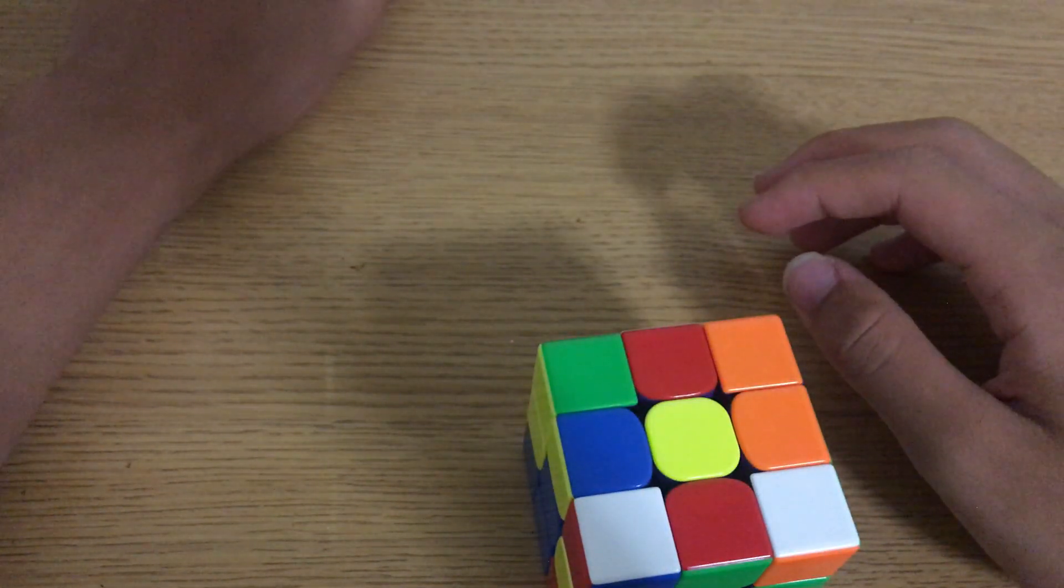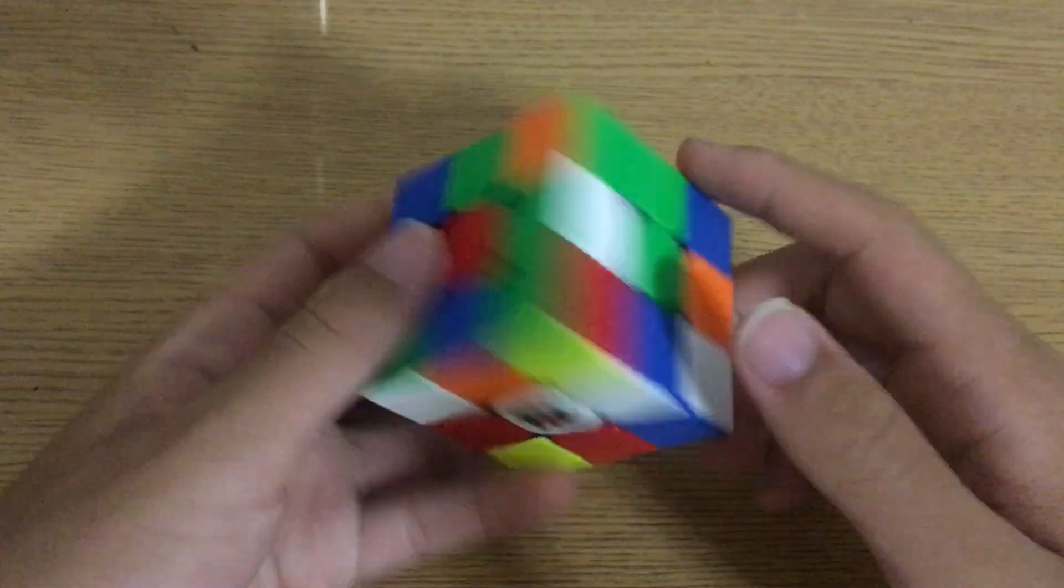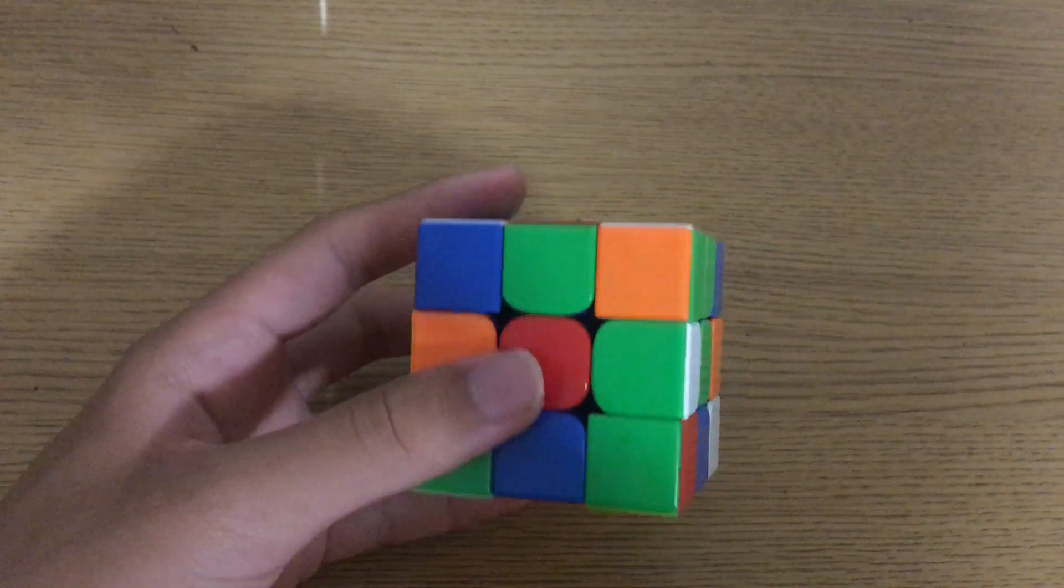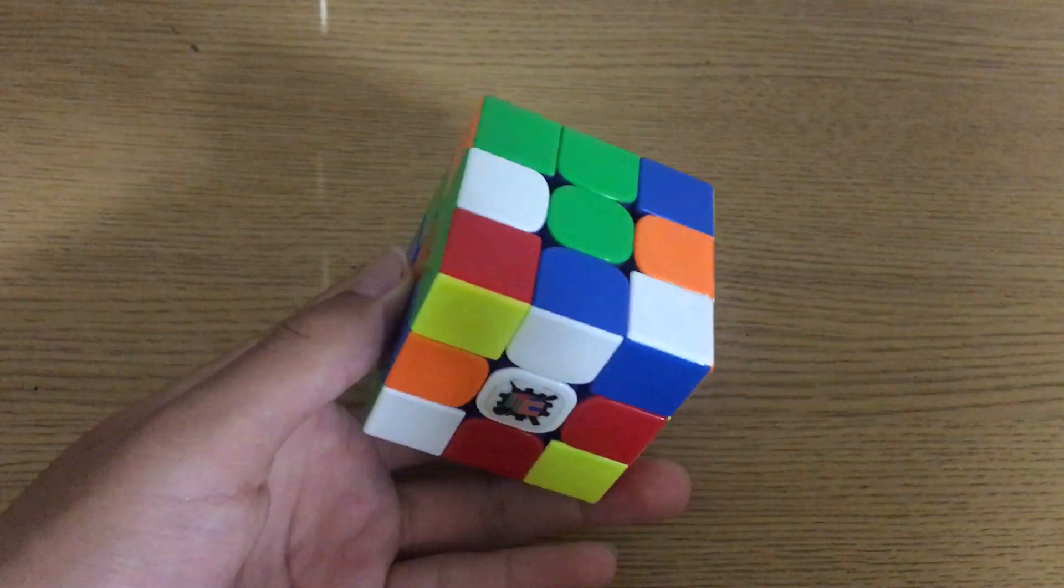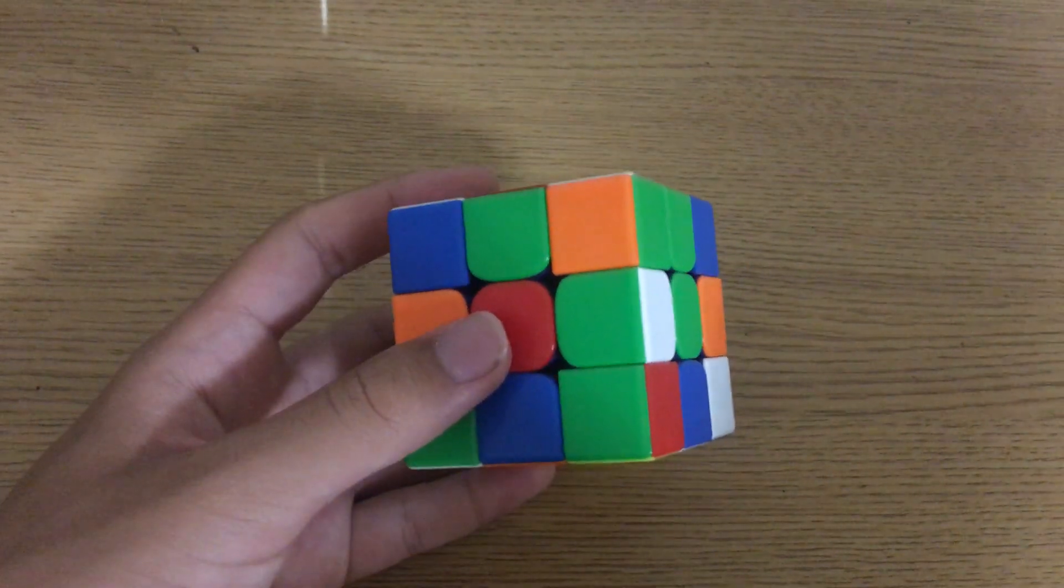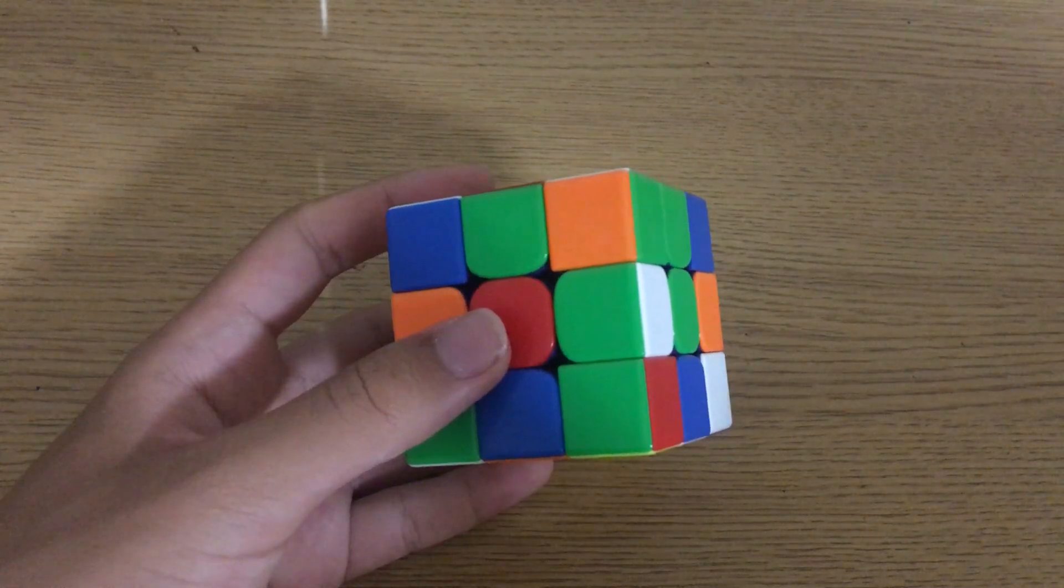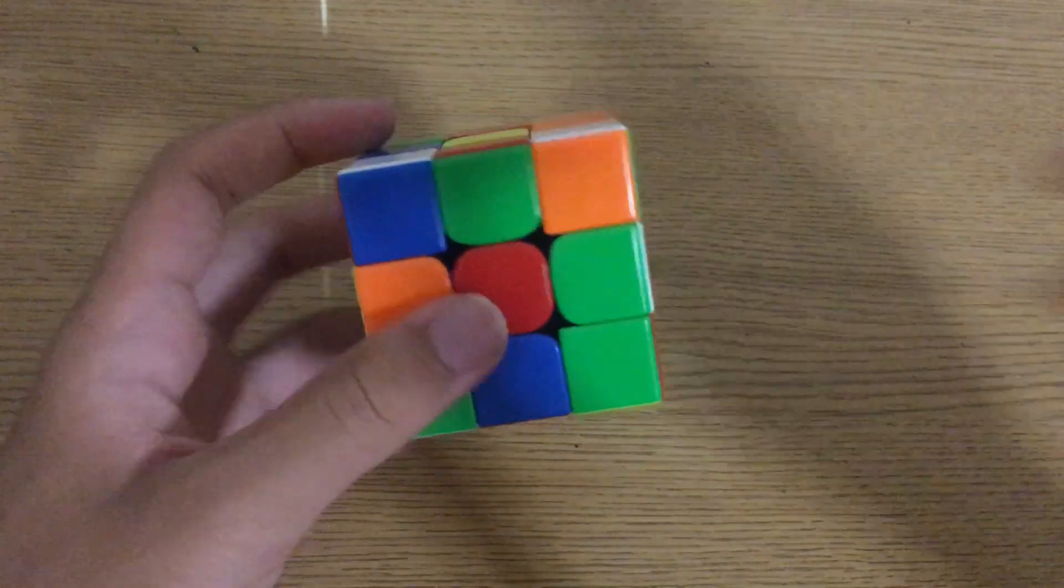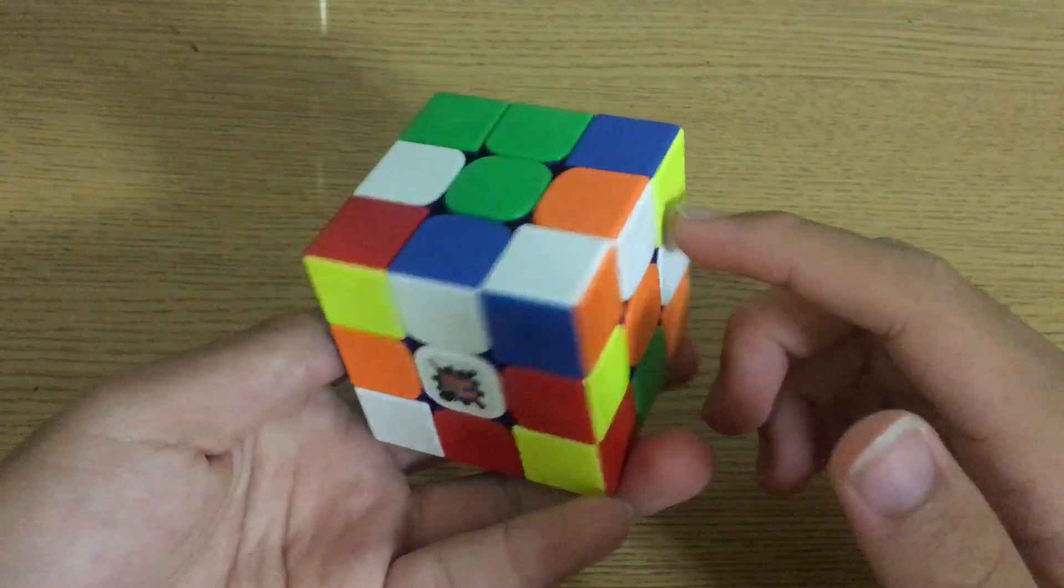On to the second solve, and this is where insanity begins, because Matty here throws down a 3.71 time with an insane solution, which I think a lot of you guys can learn a lot from, and he actually counts this 3.71 in the end, which is just absolutely insane again.